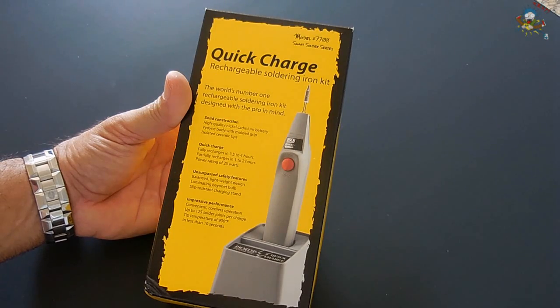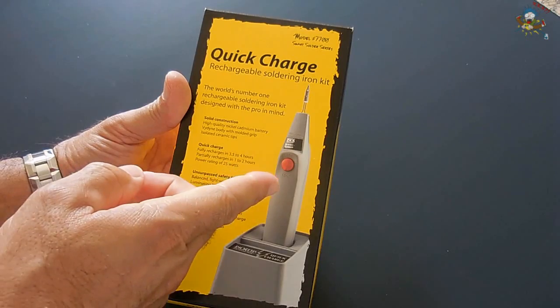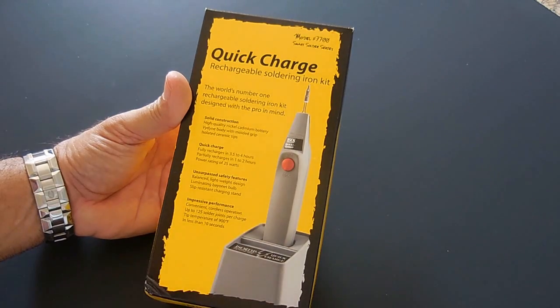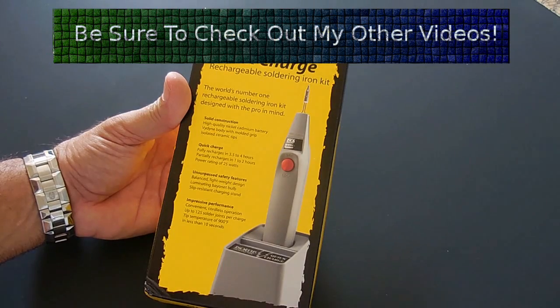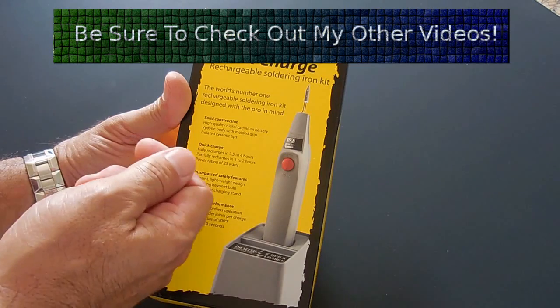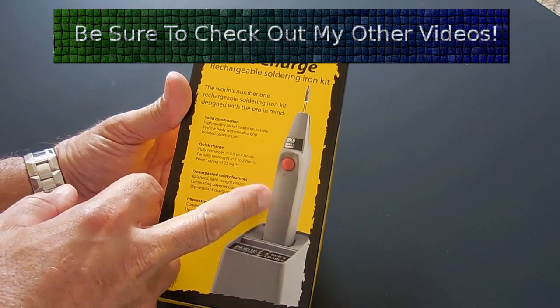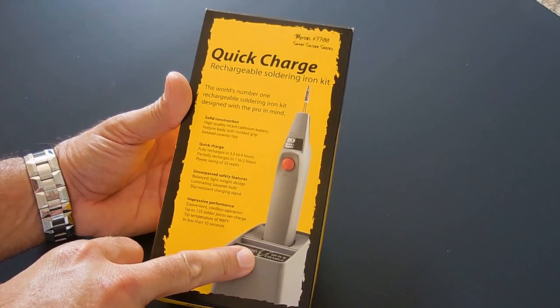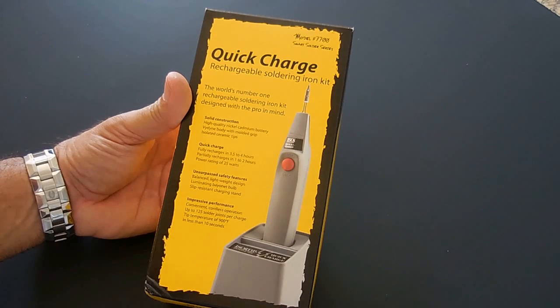And I also added a charge indicator on this model to let me know that good contact is being made with the rechargeable soldering iron and the base. Those of us who have had cordless vacuum cleaners that hang on the wall, you all know the problem. When you go to mount the vacuum on the wall, unless you wiggle it sometimes, the charging light will not come on. So that's why it is critical that this needs to have the charging indicator because you may place this in the holder and think that it's charging. But in reality, it's not because it's not properly positioned. That's why I added it.